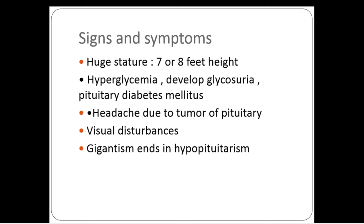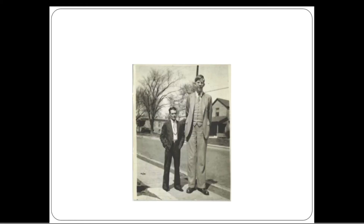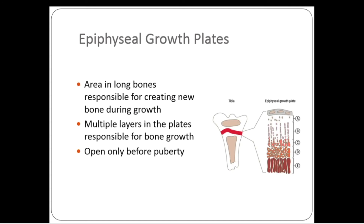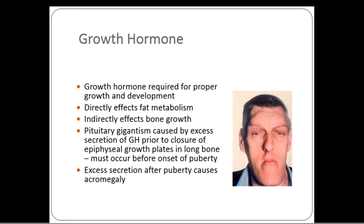Sometimes gigantism also ends up with hypopituitarism — a reduction of pituitary hormones. This picture shows a giant compared to a normal person. In the long bones, the epiphyseal growth plate continues to grow over the years; if growth hormone is not controlled before puberty the bones keep growing to seven to eight feet. Growth hormone is required for proper growth, directly affects fat metabolism, and indirectly affects bone growth.